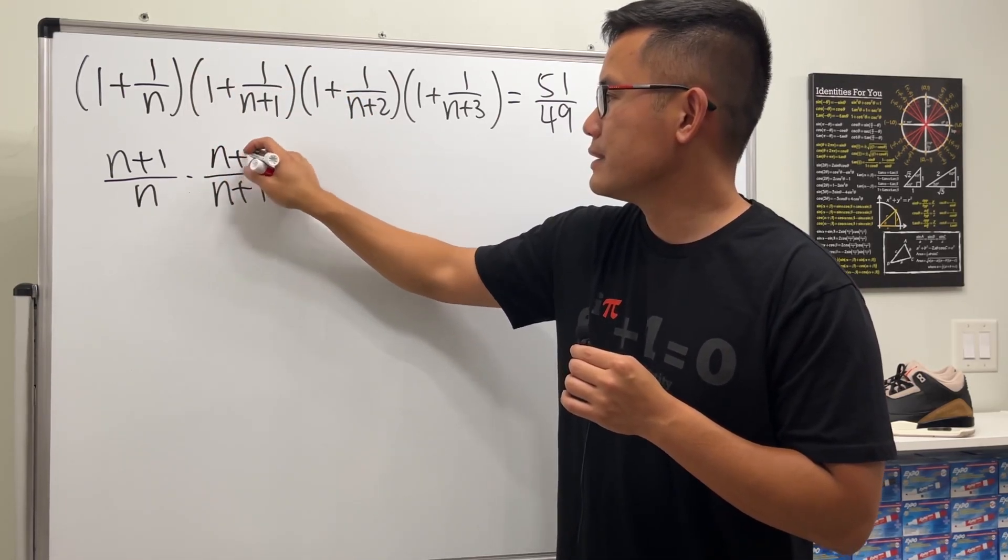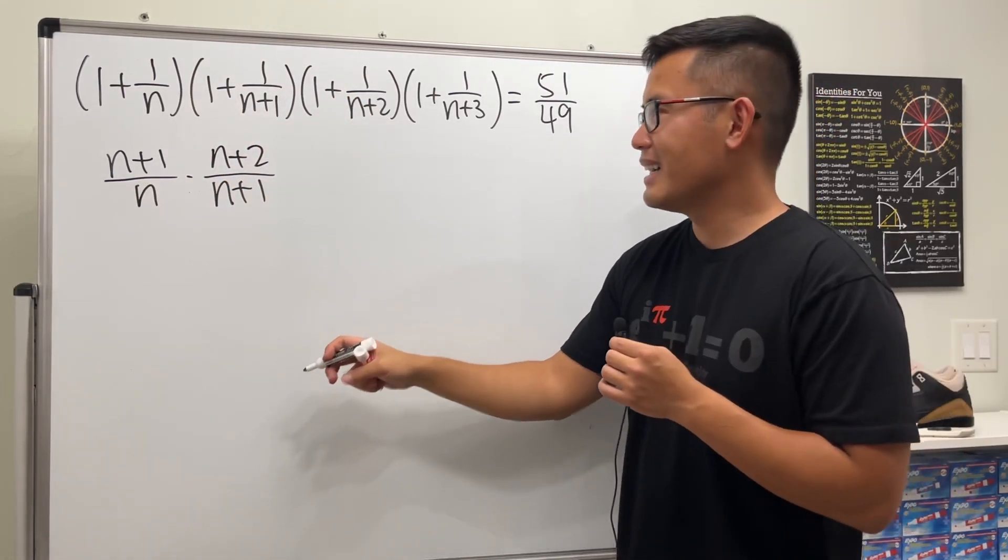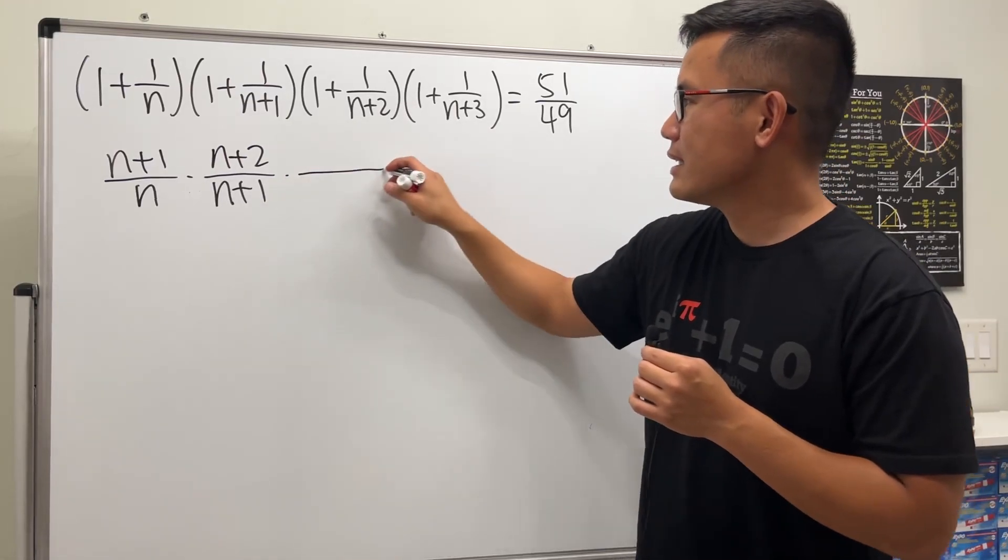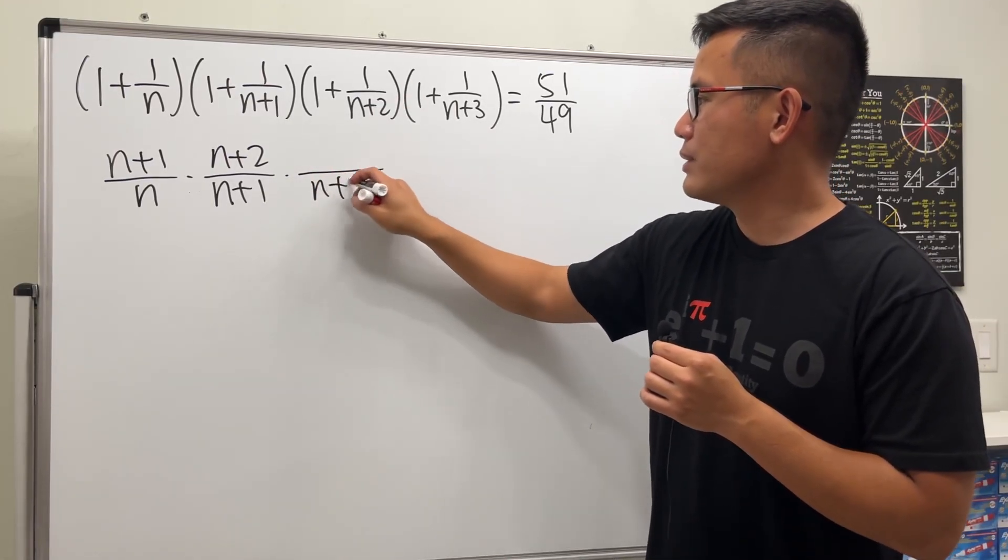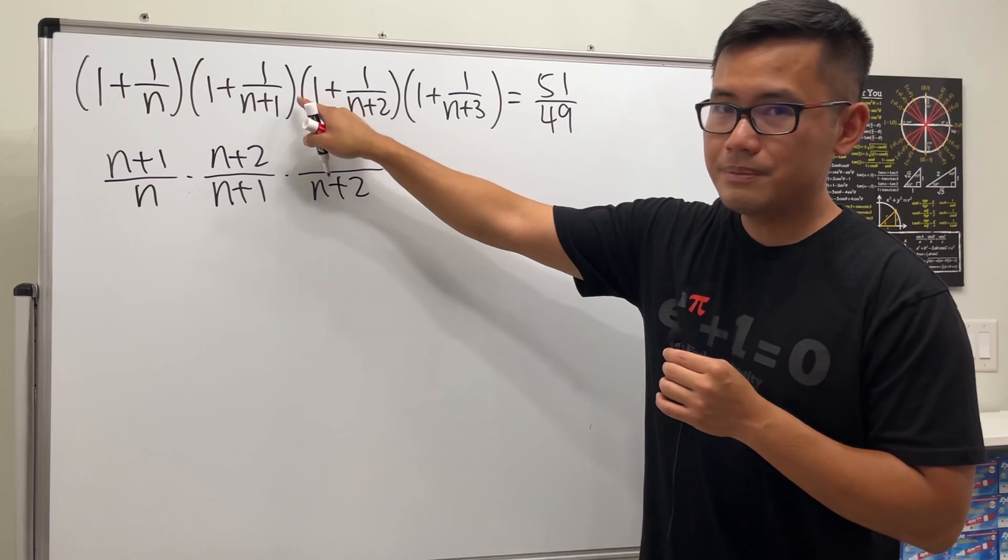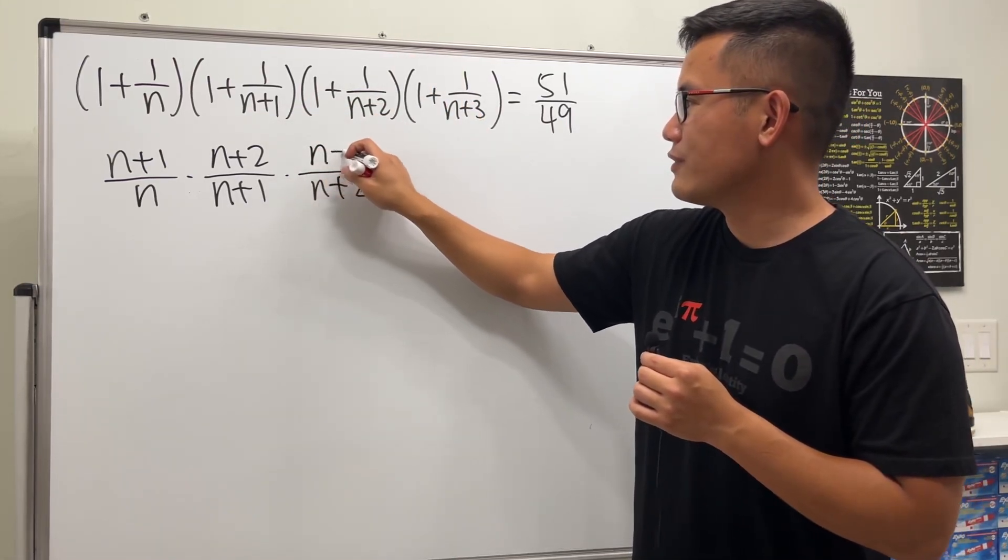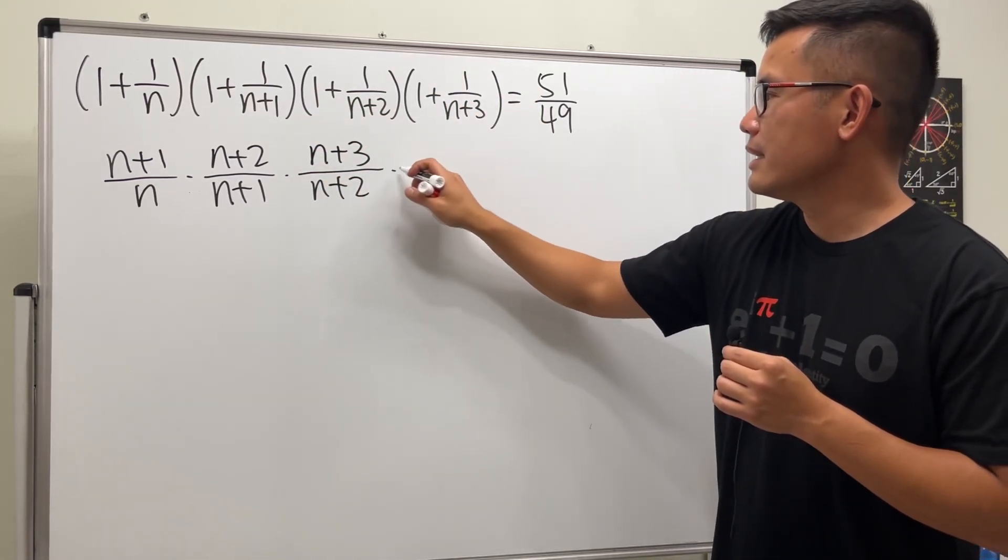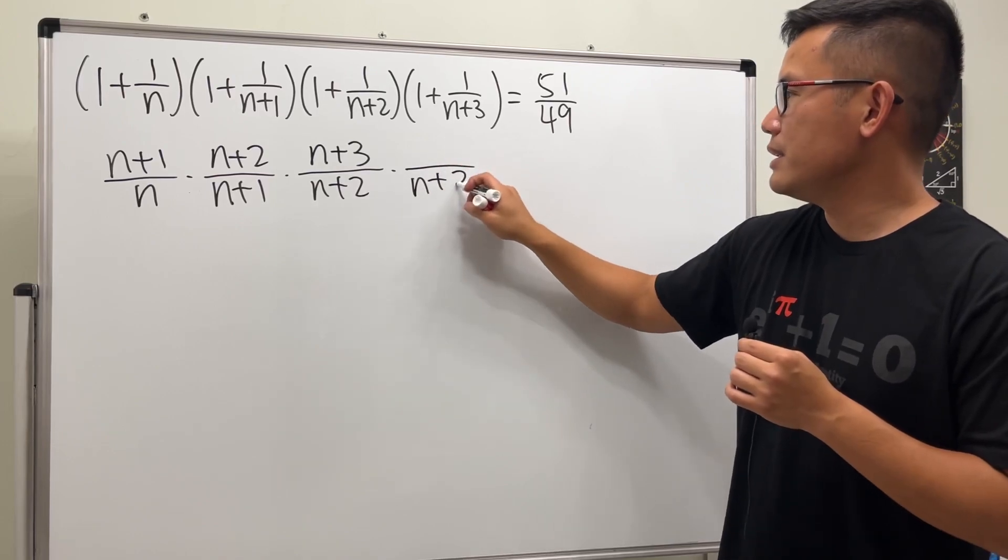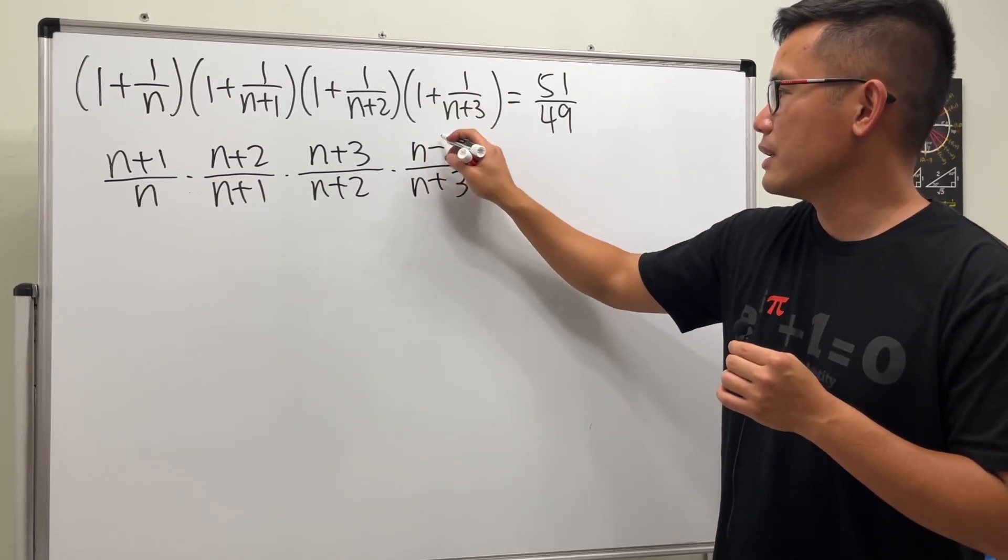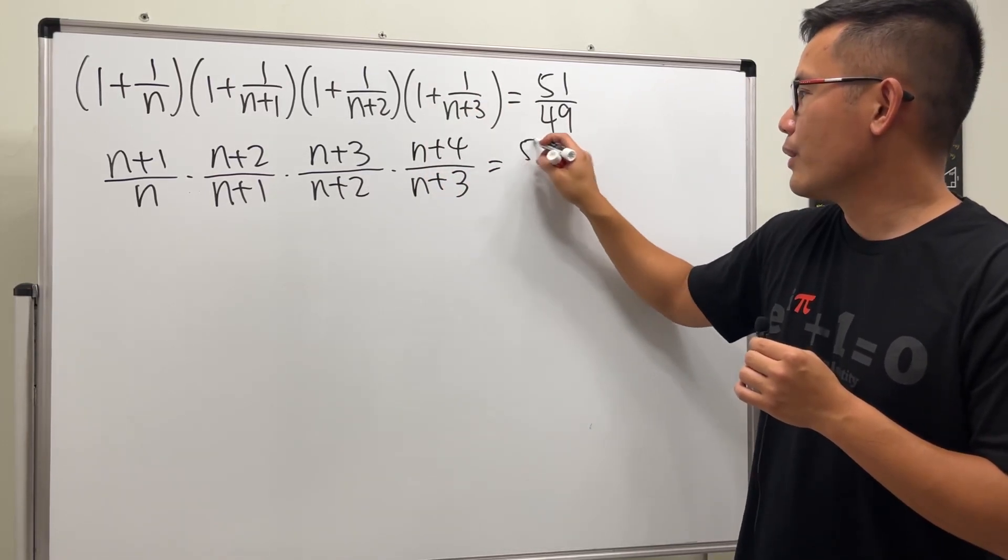The third one, multiply (n+2) on the bottom, then (n+2) plus 1, so all together we have (n+3)/(n+2). And then (n+3), it will be (n+4)/(n+3), and all in all they will equal 51/49.